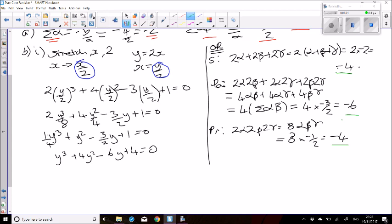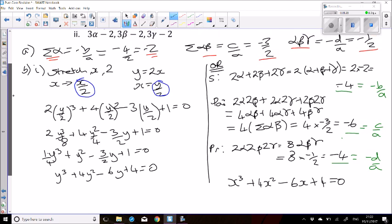Then I'm just going to take these three things that we've worked out and write them in a new equation. Remember this is negative b over a, this is c over a, this is negative d over a. So if I put that all together I get x cubed plus 4x squared minus 6x plus 4 equals 0, which is exactly the same as we got using the other method.